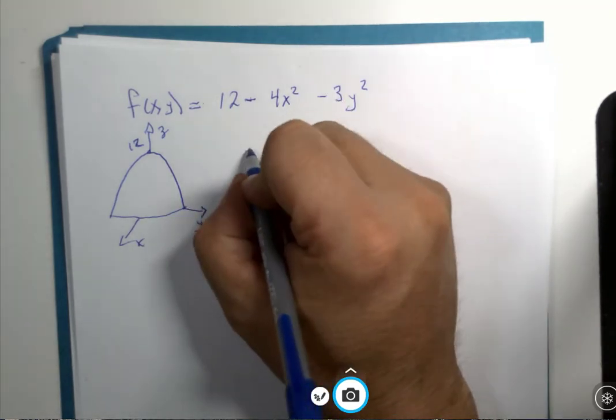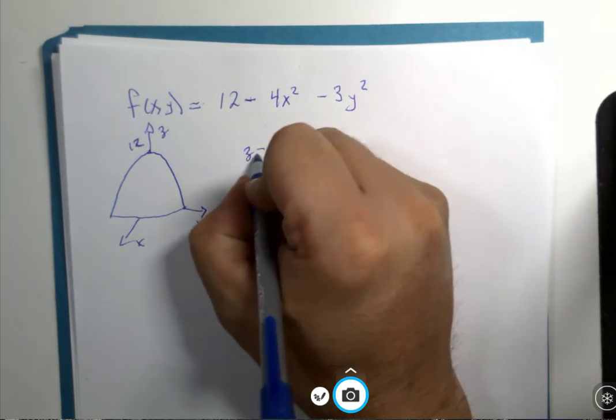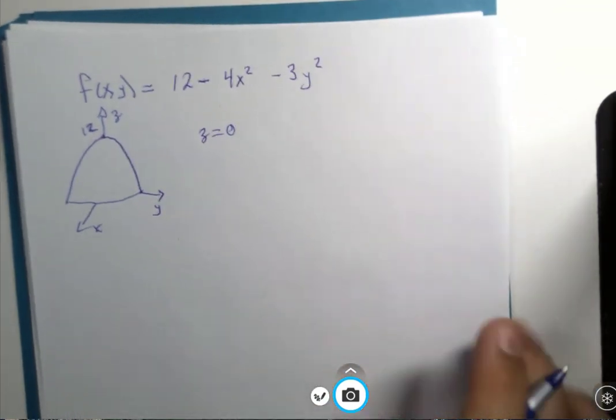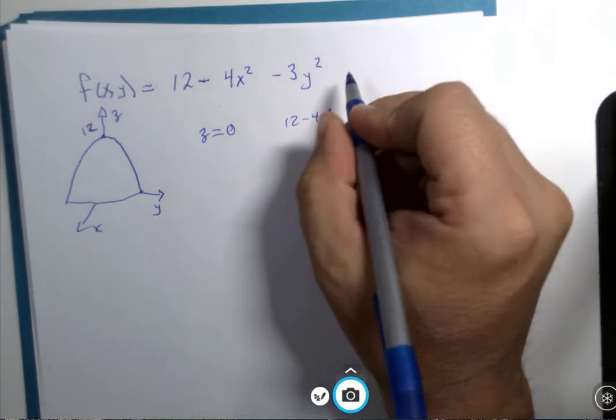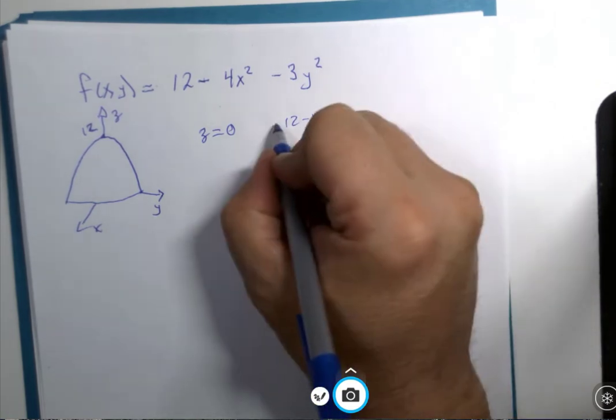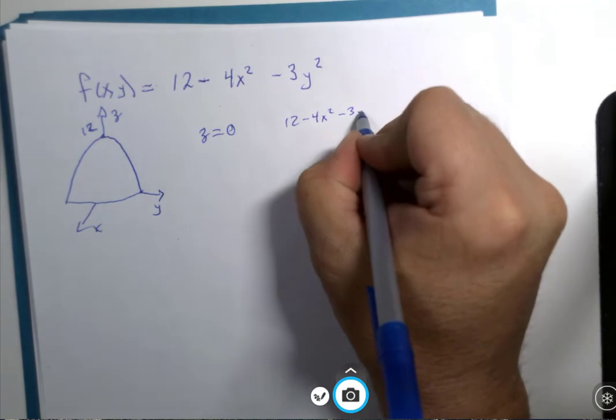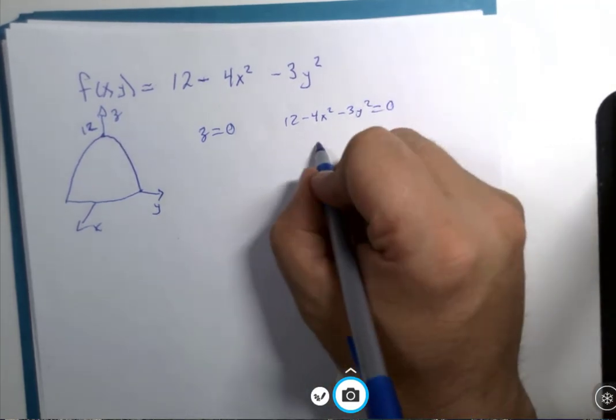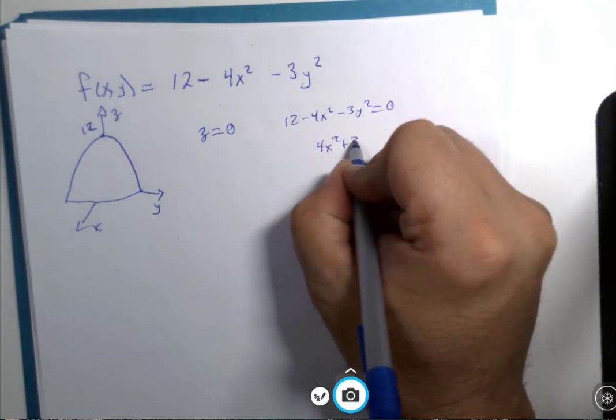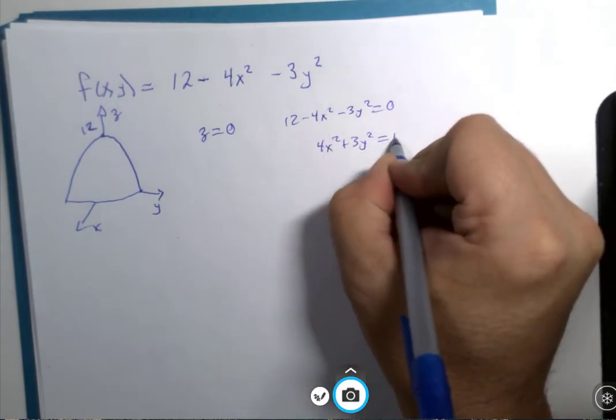And so, if I were to ask, well, what if z equals zero, 12 minus 4x squared, minus 3y squared equals zero, well, I'm going to have to do a little bit of work here. So 4x squared plus 3y squared equals 12.